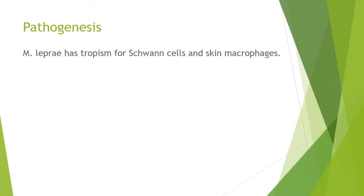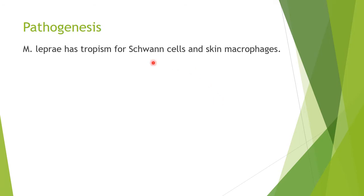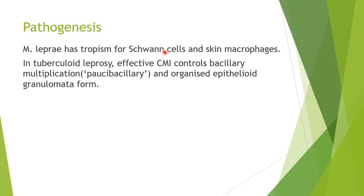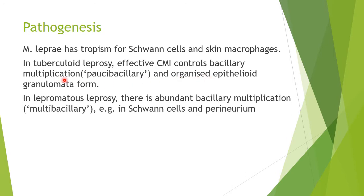Talking about pathogenesis, M. leprae has tropism for Schwann cells and skin macrophages. In tuberculoid leprosy, effective cell-mediated immunity controls bacillary multiplication and makes it paucibacillary — fewer lesions are present and organized epithelioid granulomata form. In lepromatous leprosy, however, there is abundant bacillary multiplication, cell-mediated immunity is less, and the disease takes a multibacillary form, invading Schwann cells and the perineurium.